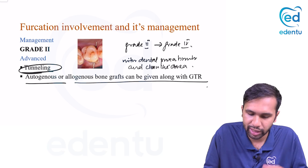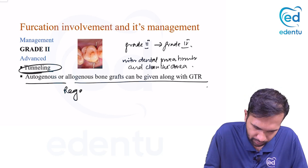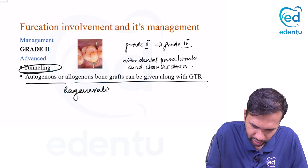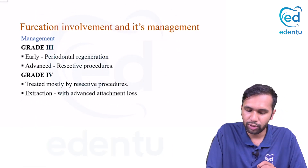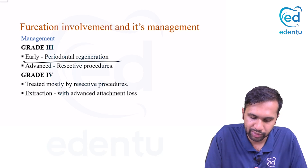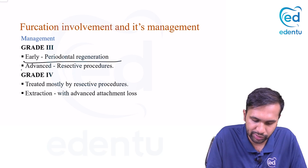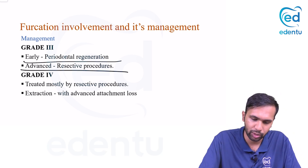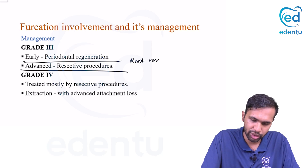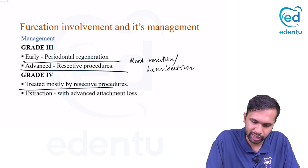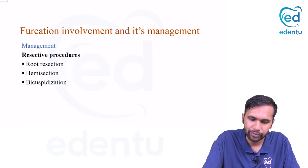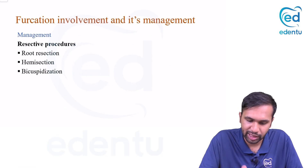You can also use an autogenous or allogenic bone graft along with guided tissue regeneration (GTR) for regeneration of the furcation defect. For grade three furcation, early cases can be managed with predominantly regenerative procedures, and advanced cases with resective procedures such as root resection or hemisection.